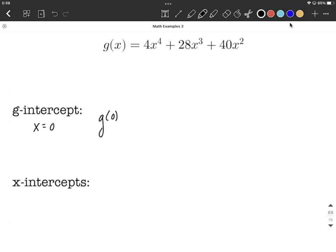So g of 0 is going to be 4 times 0 to the 4th plus 28 times 0 to the 3rd plus 40 times 0 squared, which works out to be 0 plus 0 plus 0, which is 0. So as an ordered pair, that's going to be (0, 0).